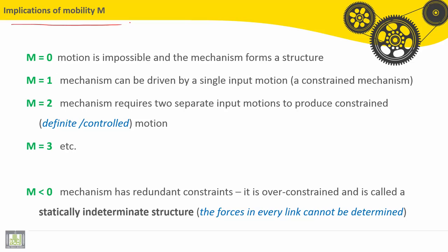Implications of mobility M. If M equals zero, the motion is impossible and the mechanism forms a structure. If it is equal to one, mechanism can be driven by a single input motion. It is called a constrained mechanism. So here it can be driven by a rotary input or translation input.